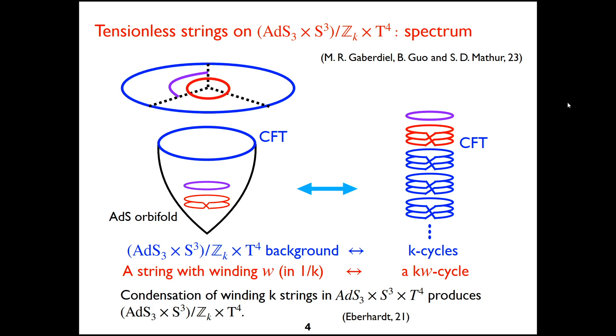So our approach begins with tensionless strings on AdS3 orbifold. Here we consider ZK orbifold. We have established a mapping for the spectrum between the bulk and the boundary theory. And the AdS3 over ZK orbifold background corresponds to all cycles in the boundary CFT being K cycles. And the string with winding number W corresponds to a KW cycle in the boundary CFT.